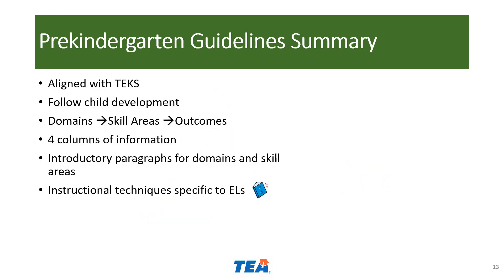To summarize: the Pre-K guidelines are aligned with the TEKS; they follow child development; the guidelines are organized by 10 domains; each domain includes skill areas and the outcomes are numbered sequentially in each area; there are four columns of information for each outcome, however four domains do not have the 48-months column; and the guidelines include instructional techniques specific to English learners indicated by the book icon. Thank you for your time. This concludes Module 3, Understanding the Pre-Kindergarten Guidelines.